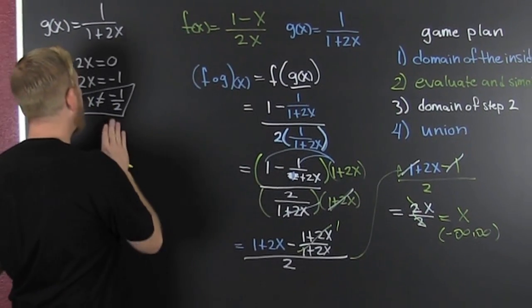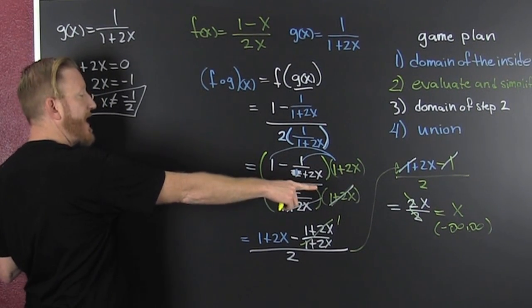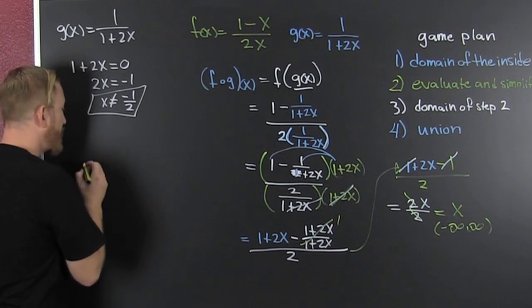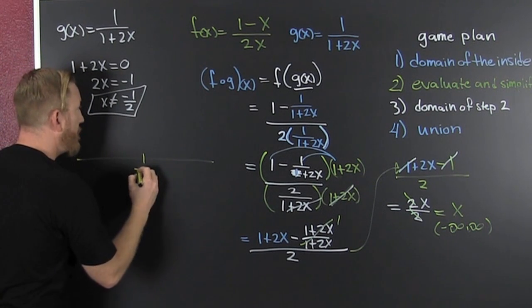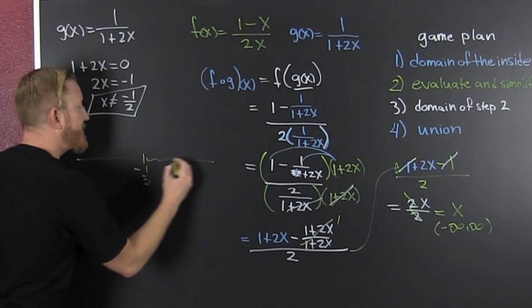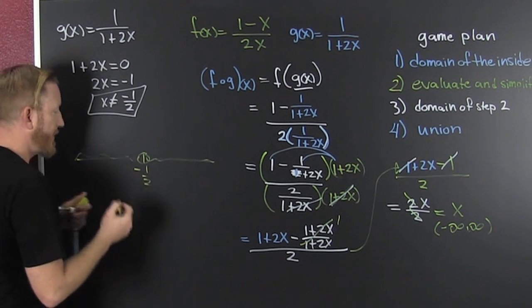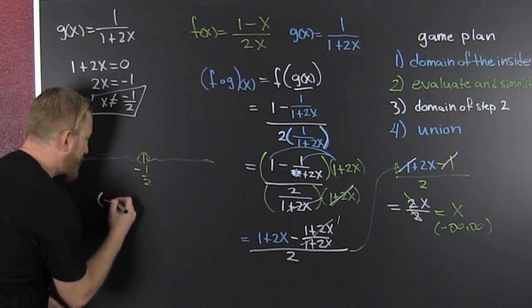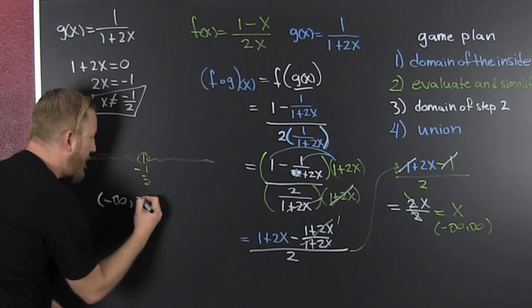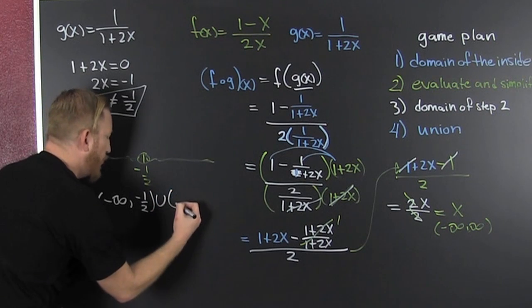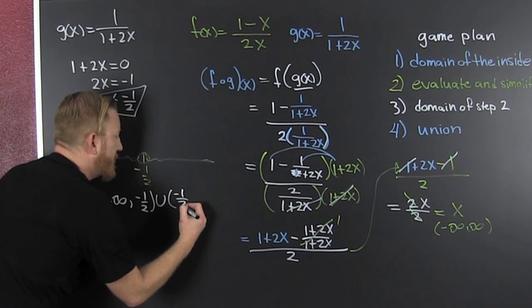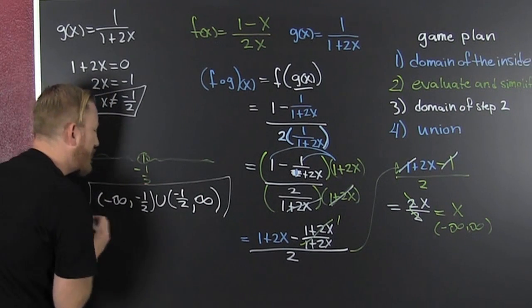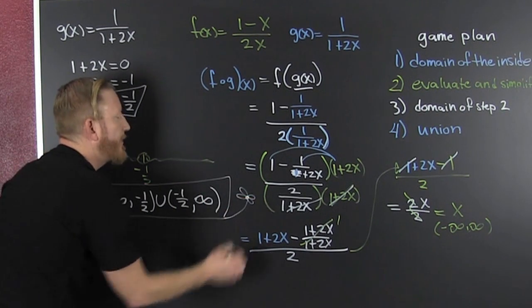We need to put them together. This one and that one. So our only restriction is x cannot be minus 1 half. So if we're on a number line, minus 1 half, this is good, this is good, that's not good. How do we put that together in interval notation? Like this. That's minus infinity to minus 1 half, and we onion that up with minus 1 half to infinity.